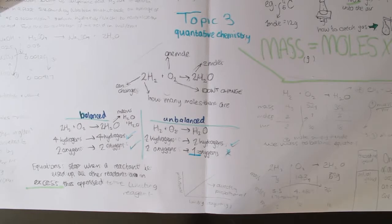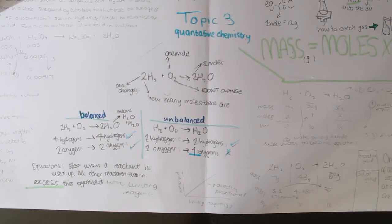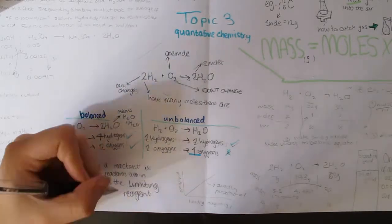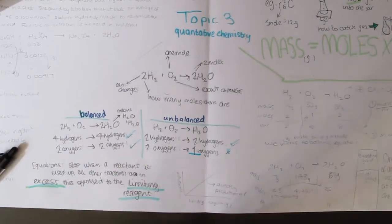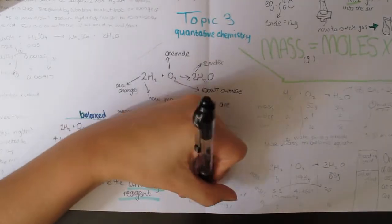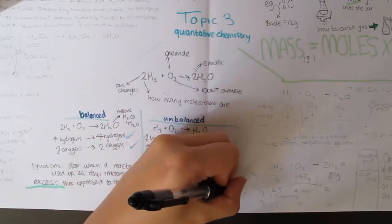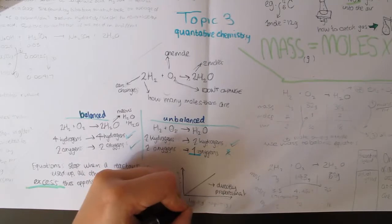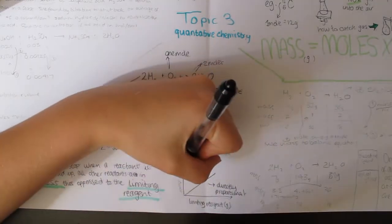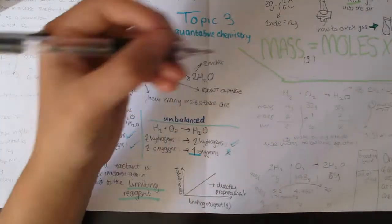First, divide mass by MR to find the number of moles for each substance. Then divide the number of moles by the smallest amount of moles, so one amount in the equation is now 1. If all the numbers aren't whole, multiply them all by the same numbers until they are. You can then finish with the table and write the balanced symbol equation off to one side.